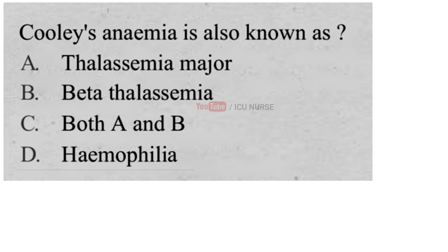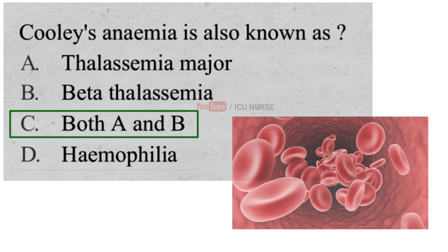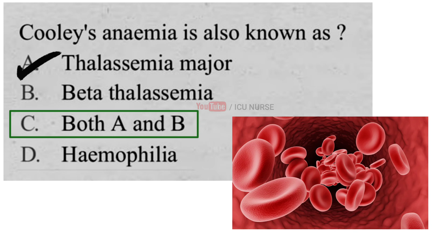Cooley's anemia is also known as: A. Thalassemia major, B. Beta Thalassemia, C. Both A and B, D. Haemophilia. And the correct answer is C. Both A and B. Thalassemia major, or beta-thalassemia, is one of the common monogenic hereditary haemoglobin disorders. It results from the absence of a beta-globin chain in the pathway of haemoglobin production.